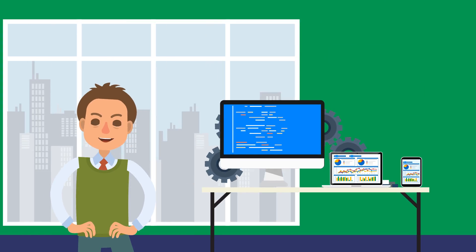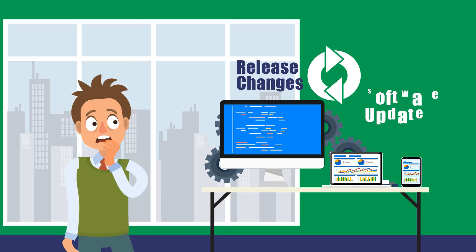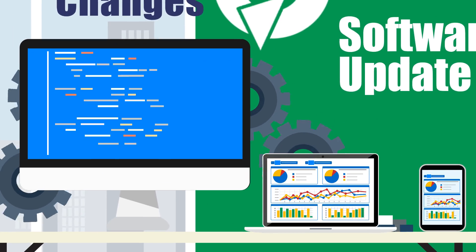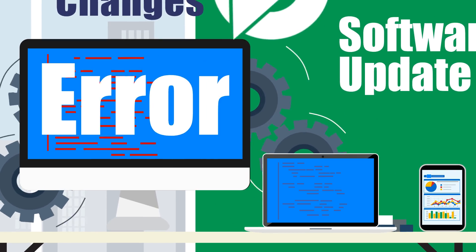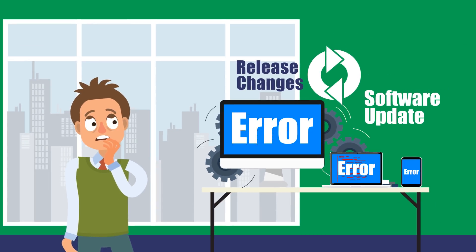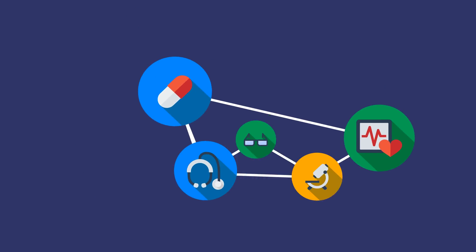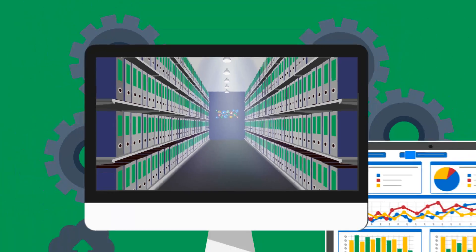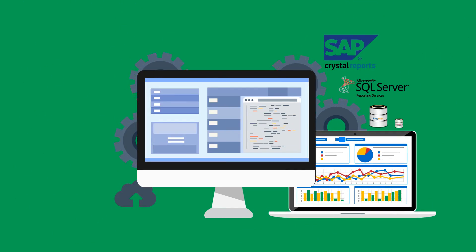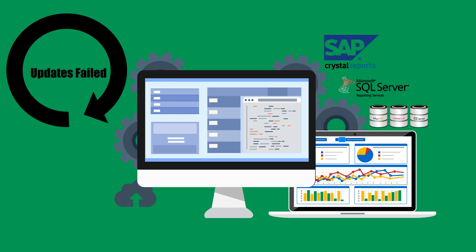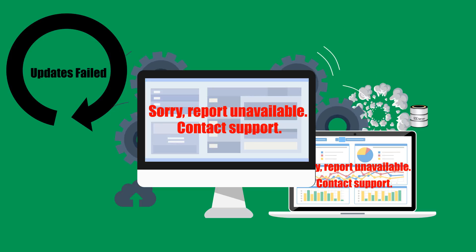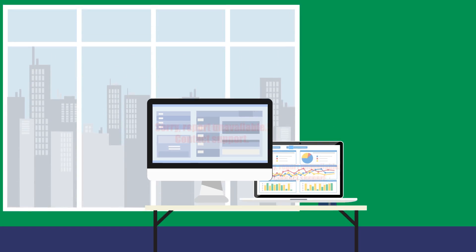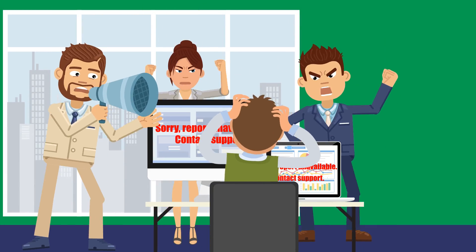It's a business intelligence analyst nightmare. Any change within a software code stack can cause functional defects, scalability issues, and performance problems within your application. You might be a healthcare organization relying on a massive library of Crystal or SSRS reports built on Epic Clarity. There's a new release and suddenly all of your custom reports are affected, delaying implementation and severely disrupting your business. That can lead to significant remediation costs.